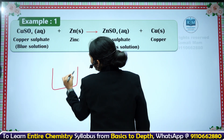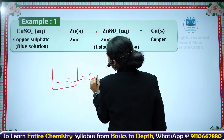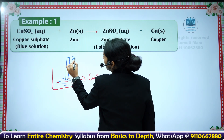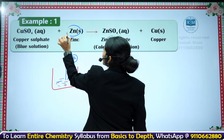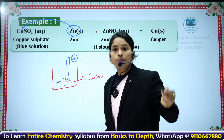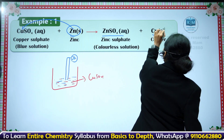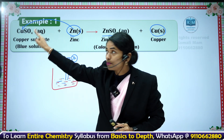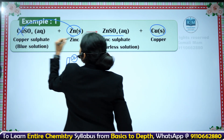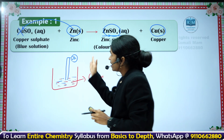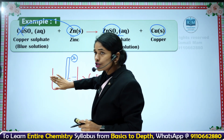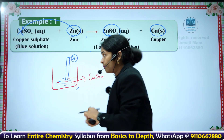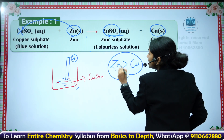Let us take one container. In that, take copper sulphate solution, which is blue in color — CuSO4 aqueous solution. In this, put a strip of zinc rod. When you put this zinc metal here, zinc displaces copper from the copper sulphate and it forms zinc sulphate and copper metal. The blue color of the solution slowly fades into a colorless solution due to the formation of zinc sulphate. Zinc is more reactive than copper, that is why zinc displaced the copper.